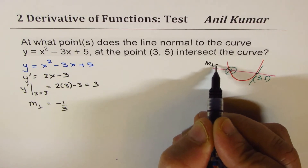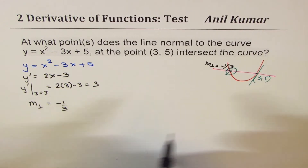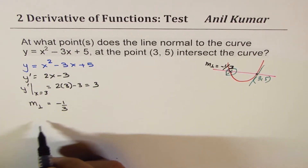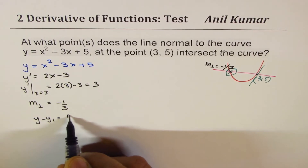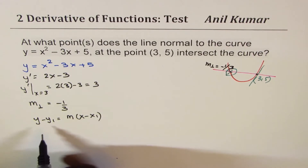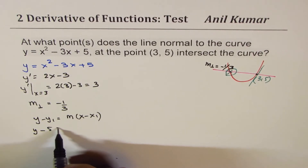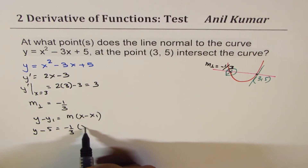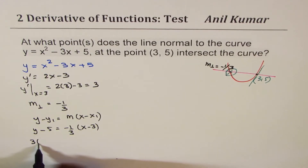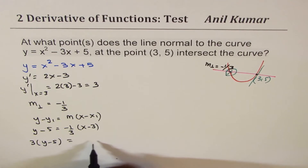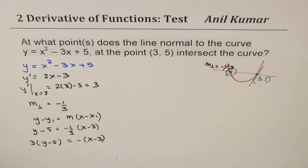We know the slope of the normal line is -1/3. Using the point-slope form with point (3, 5): y - 5 = -1/3 · (x - 3). Cross-multiplying gives 3(y - 5) = -(x - 3). Opening the brackets: 3y - 15 = -x + 3.